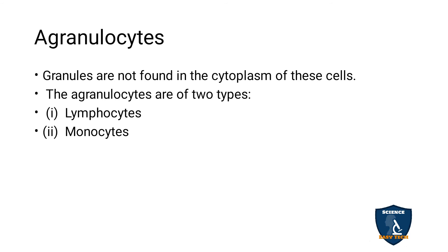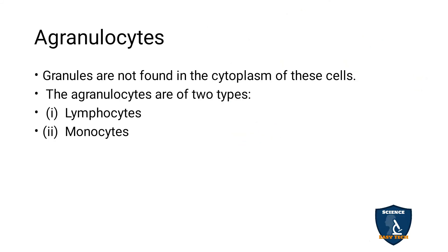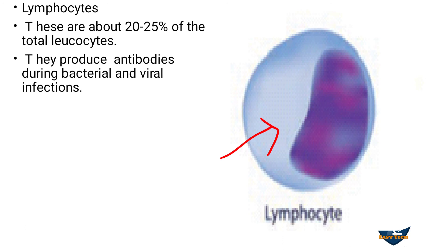Agranulocytes: granules are not found in the cytoplasm. Agranulocytes are of two types — lymphocytes and monocytes. Lymphocytes constitute 20 to 25 percent of total leukocytes and produce antibodies for bacterial and viral infections.